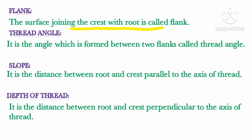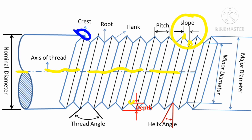The depth of thread is the distance between the root and the crest but measured perpendicular to the axis of the thread. In the diagram, you can see that this distance — between the root and the crest — is perpendicular to the axis of the thread.